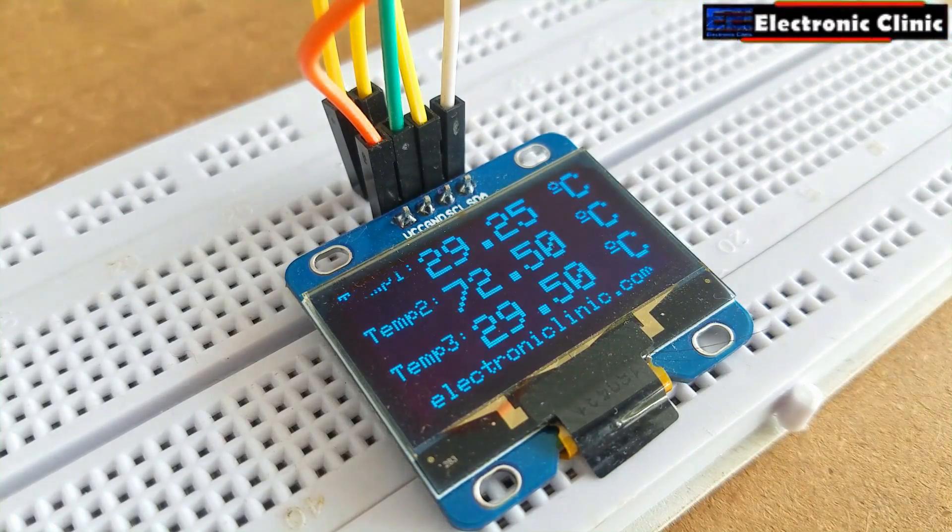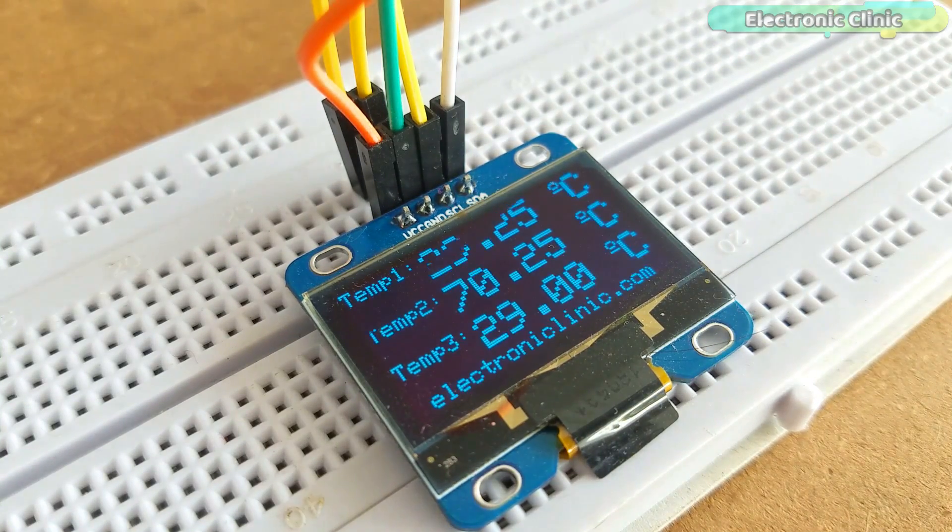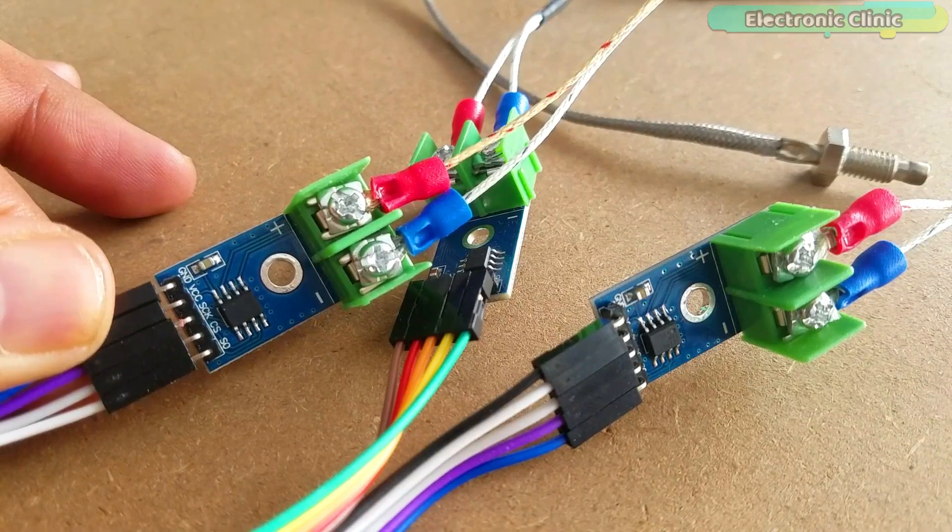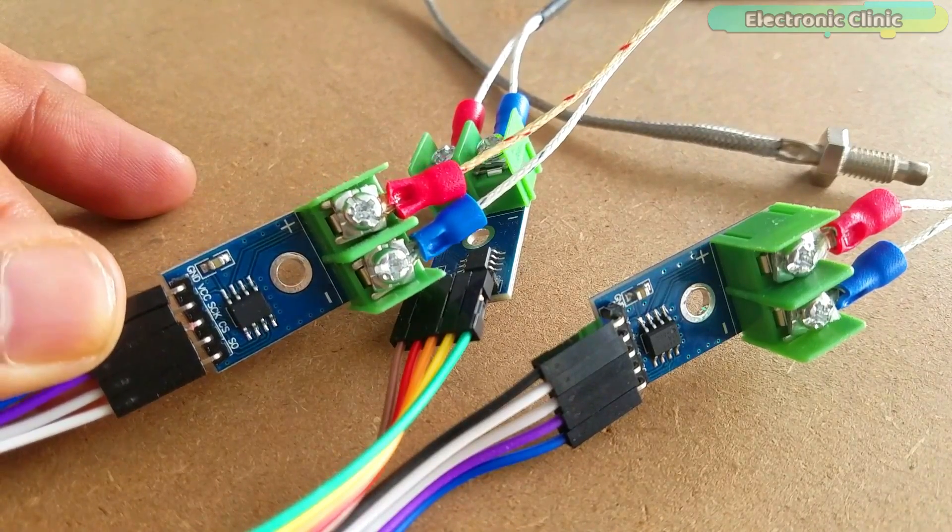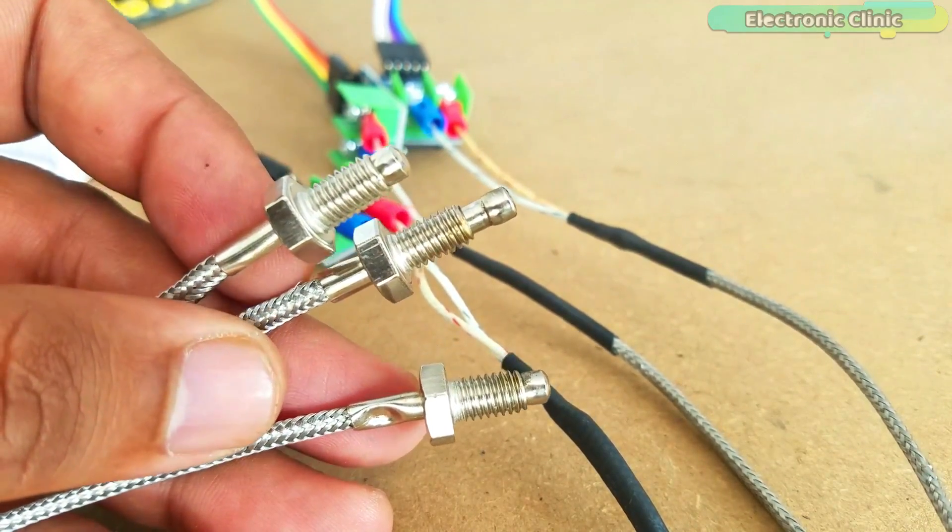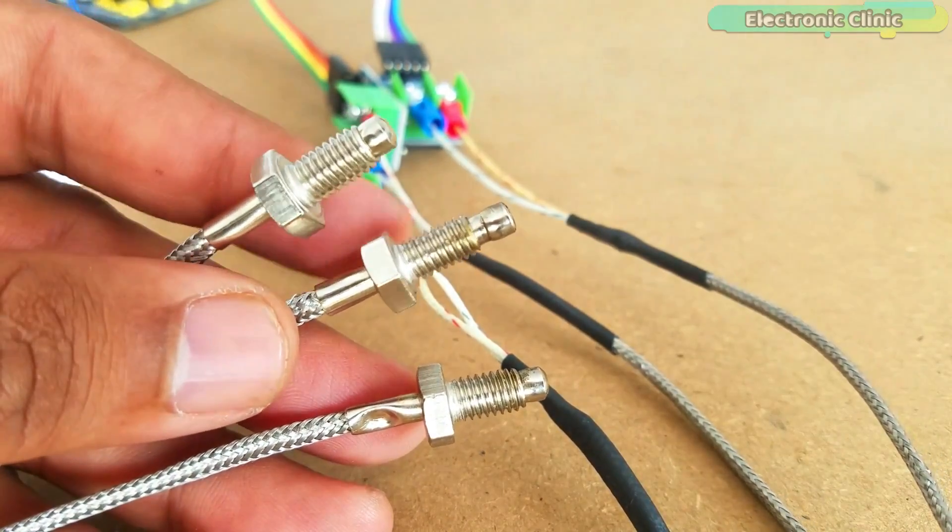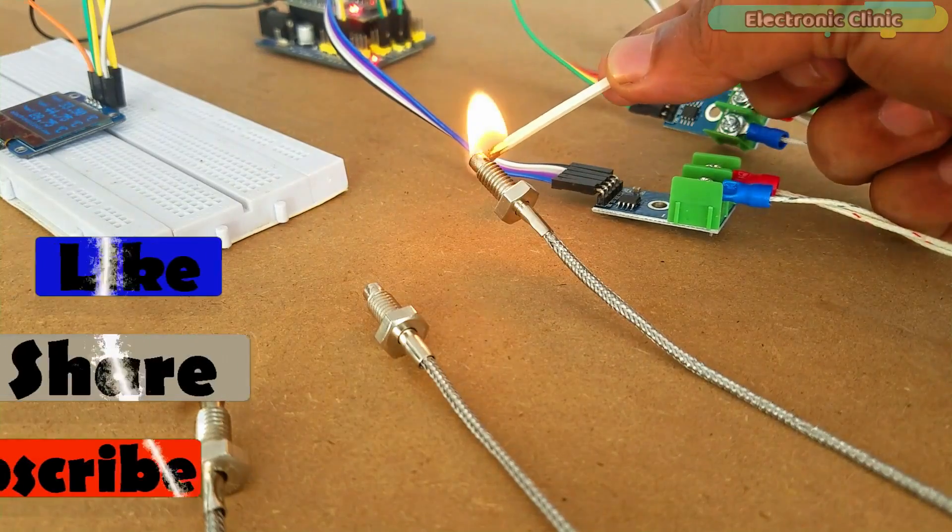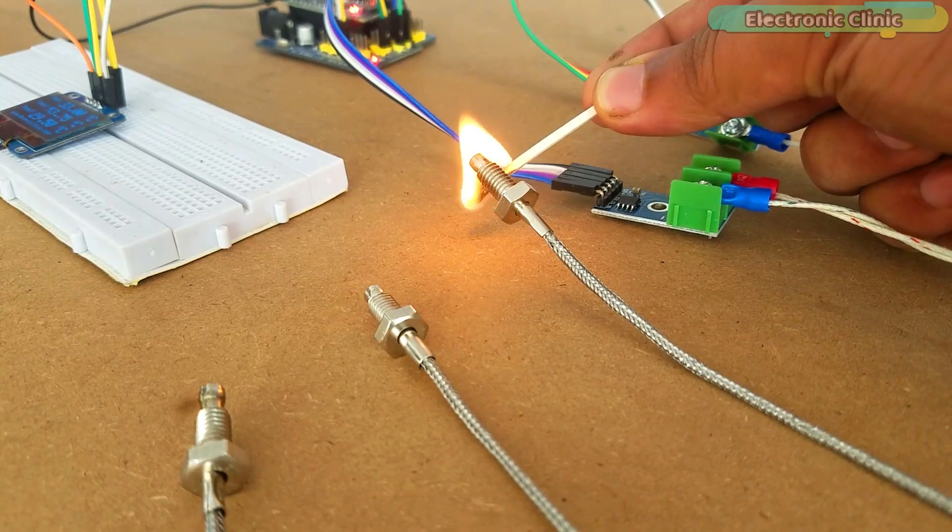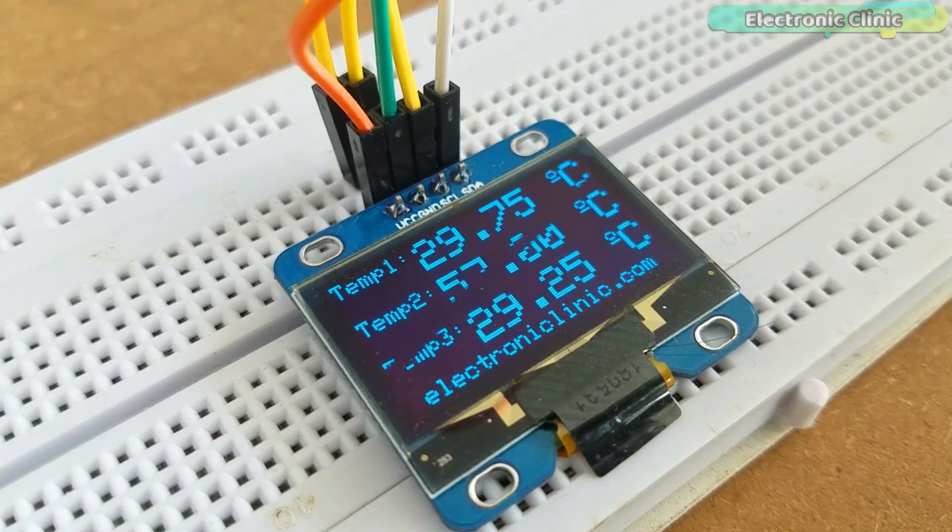In today's episode, you will learn how to make an industrial temperature monitoring system using Arduino, I2C supported OLED display module and multiple MAX6675 thermocouple temperature sensor amplifiers based on K-type thermocouples capable of measuring temperature from 0 to 1024 degrees centigrade. This is an industrial level temperature monitoring system and can be used in plastic injection molding machines, food industries and so on, where you need to monitor multiple temperature sensors.